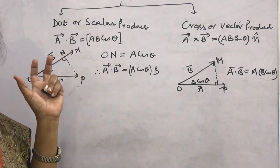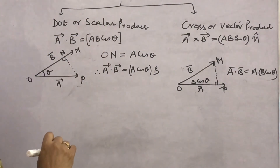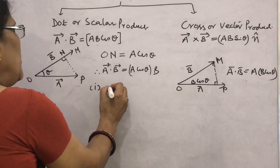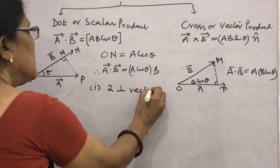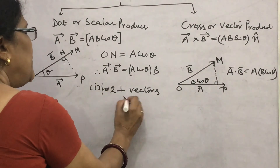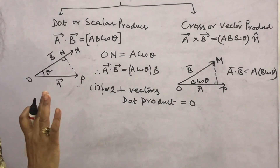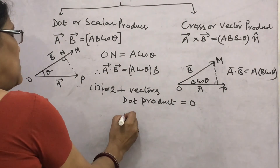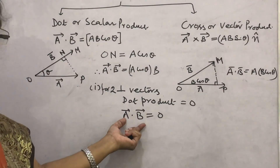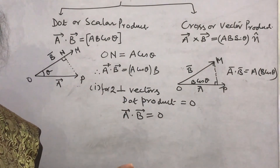What are the properties of dot product? Since the dot product is ab cosθ, the first property is: for two perpendicular vectors, the dot product is 0, because cos 90° = 0. The reverse can also be asked: if the dot product of two vectors is 0, then the angle between them is 90 degrees, meaning those two vectors are perpendicular.